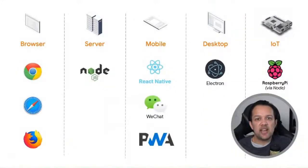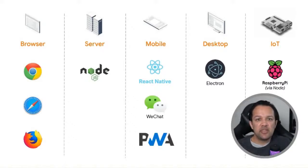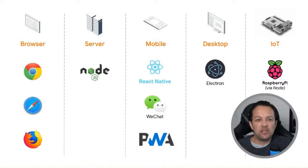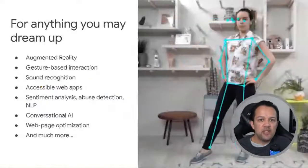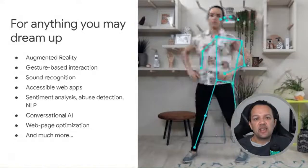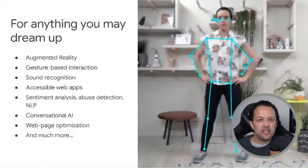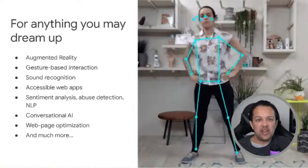JavaScript is one of the only languages that can run across all of these devices without any extra plugins, giving you the ability to deploy and run anywhere with just one code base — a great win for JS devs. With TensorFlow.js, you can run, retrain via transfer learning, or write your own models completely from scratch. You can use it for anything you might dream up — things like sound recognition, gesture-based interaction, sentiment analysis, conversational AI, and much more.